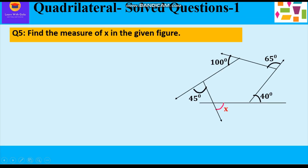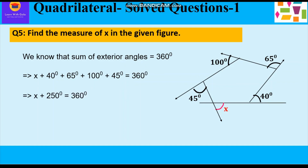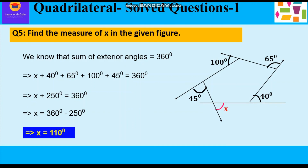Question number 5: find the measure of x in the given figure. This figure is a pentagon and x is one of its exterior angles. Since the sum of exterior angles of any polygon is 360°, we write: x + 40° + 65° + 100° + 45° = 360°. So x + 250° = 360°, giving x = 110°.